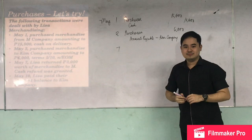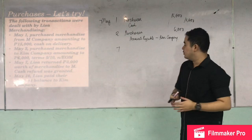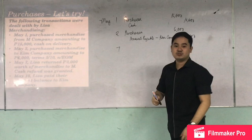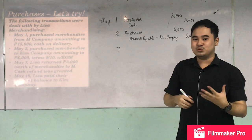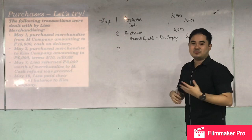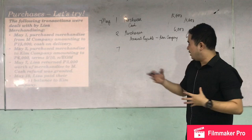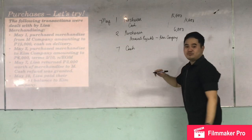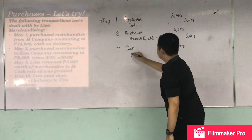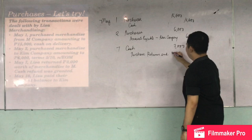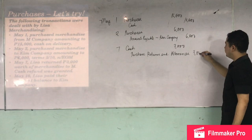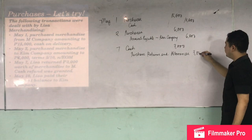On May 7, Lisa returned 3,000 worth of merchandise to M Company and a cash refund was granted. From the buyer's perspective, the entry is: debit Cash 3,000 and credit Purchase Returns and Allowances 3,000.